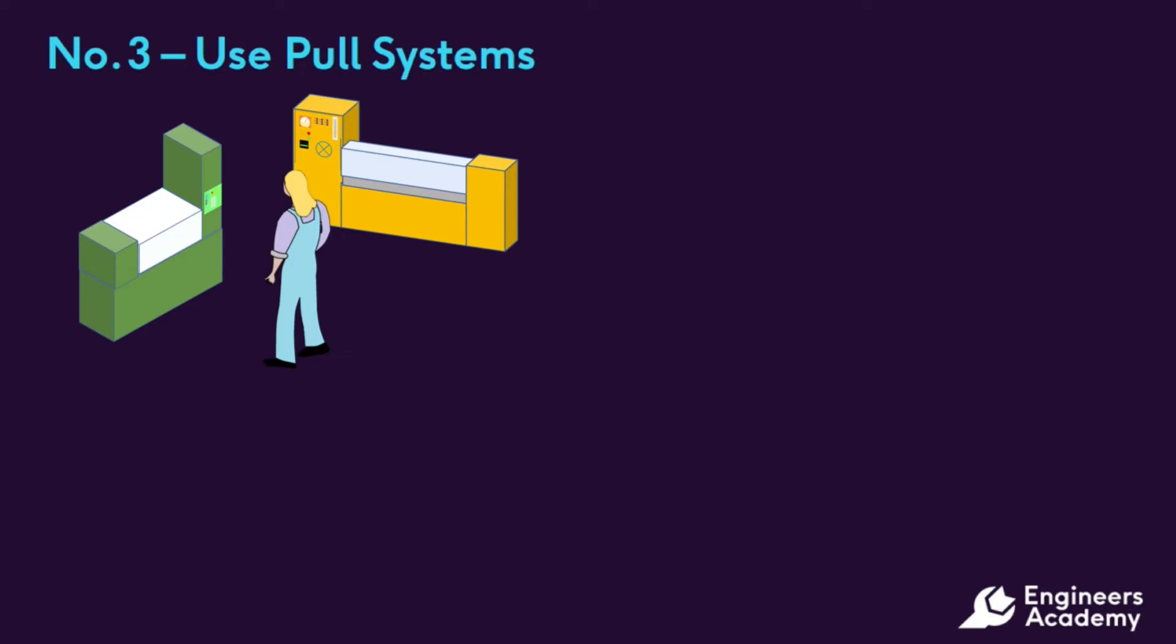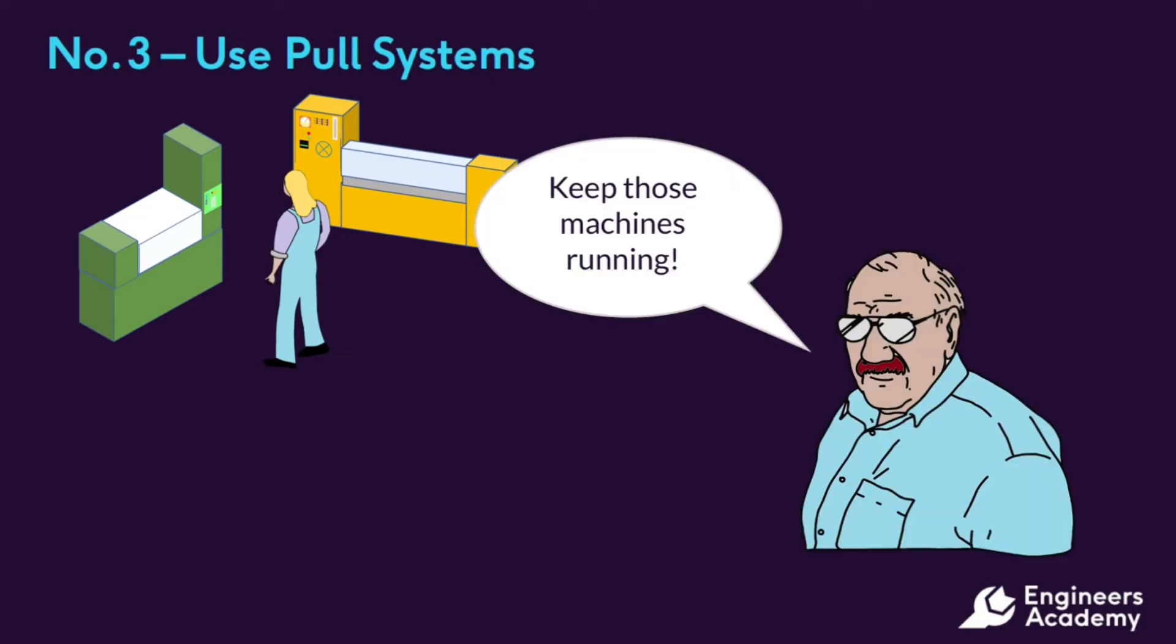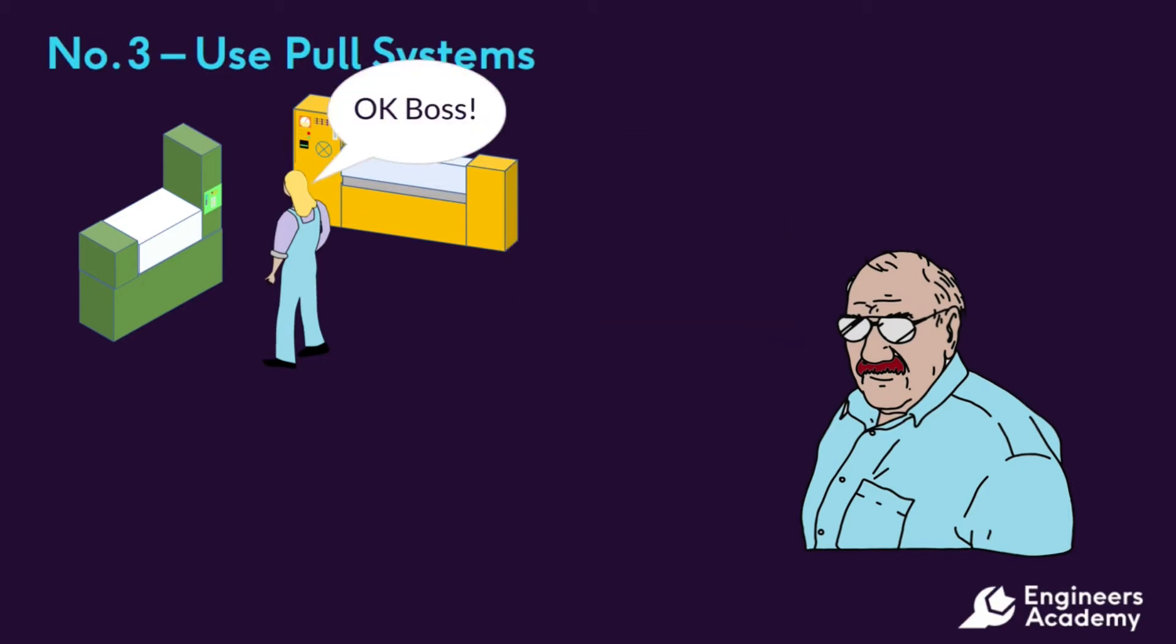In traditional manufacturing systems, machines are managed to maximize output. They are run as fast as possible for as long as possible. The term 'sweating the assets' gives us a visualization of this kind of operation. They are generally accounts-driven and the focus is to gain payback and returns on the investment in the capital equipment.